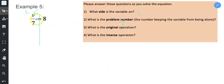What is the original operation? Between the V and the 7 is a fraction bar and a fraction bar means division so I'm going to draw a division symbol. What is the inverse or opposite operation? The opposite of division is multiplication.